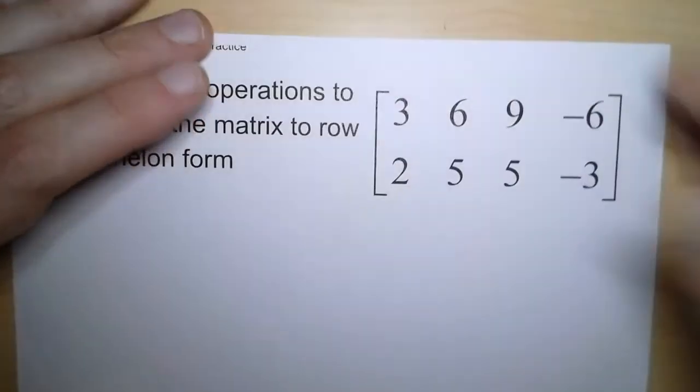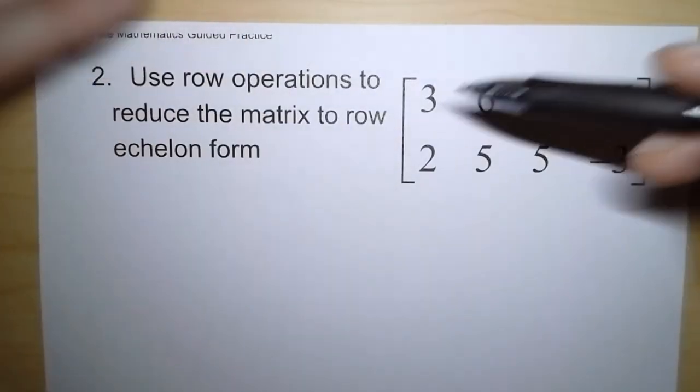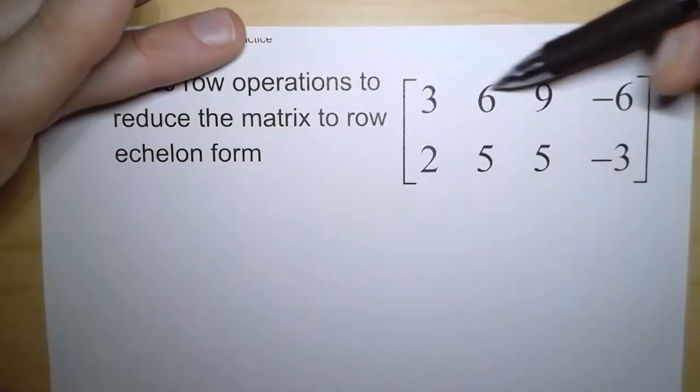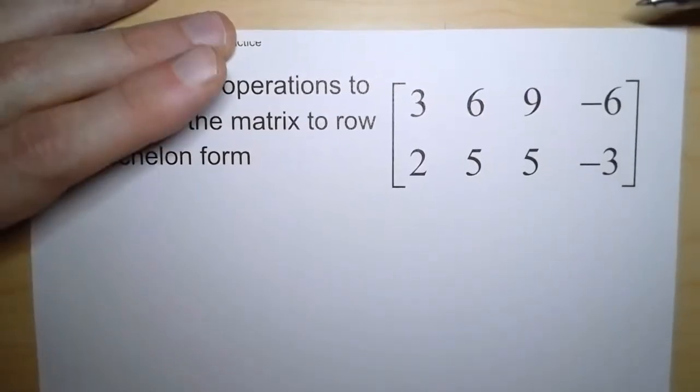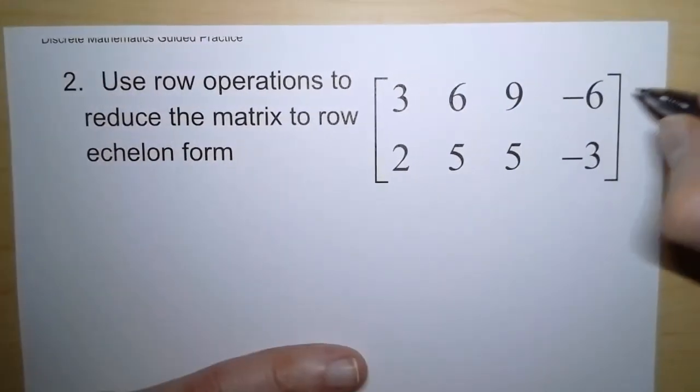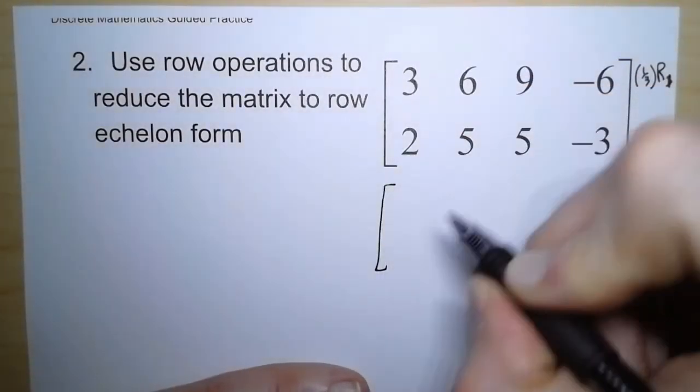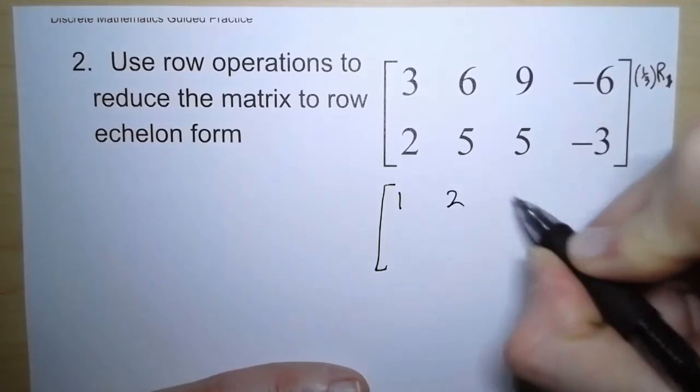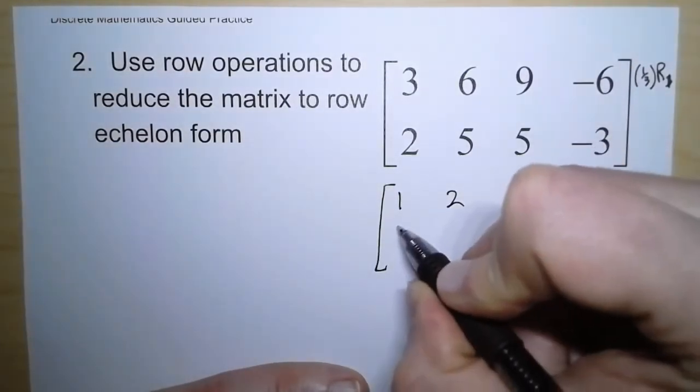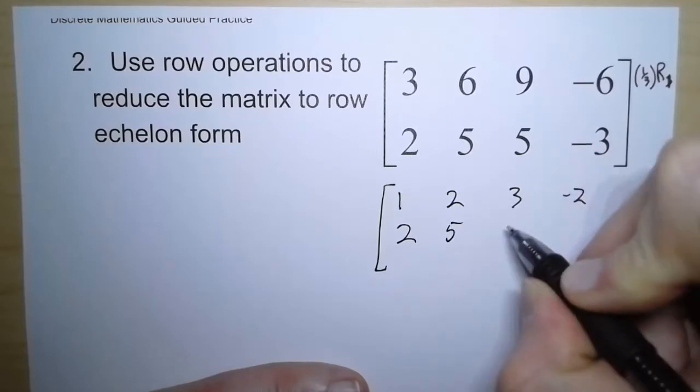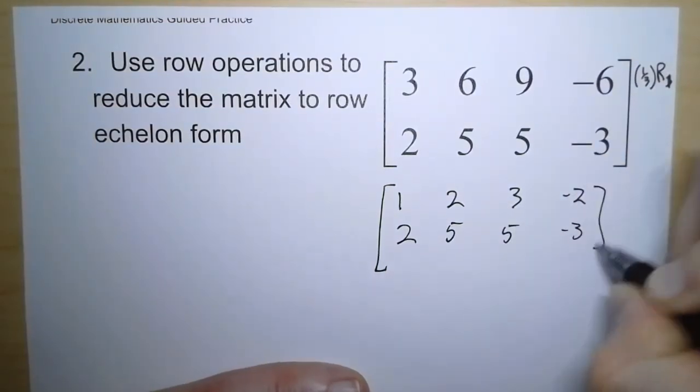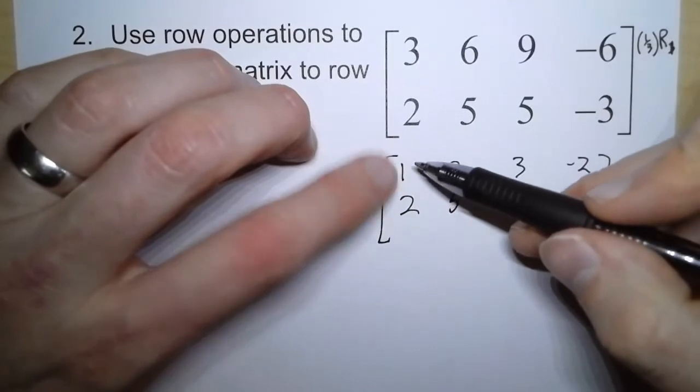Let's look at the next example. Now here we're not given a 1 to start with, but that's okay because if you notice all of these are divisible by 3. So I'm going to take this row and multiply by one-third. One-third times row 1 will be our first operation: 1, 2, 3, negative 2. And that second row is going to be left unchanged. So now we've got our 1 where we want it.